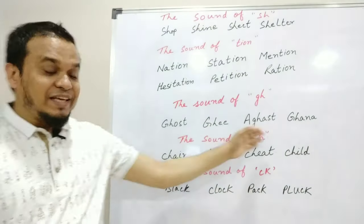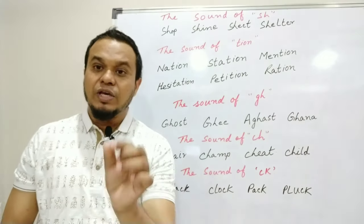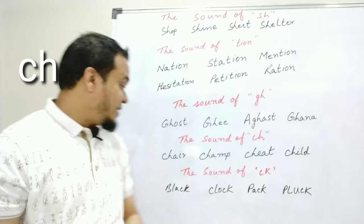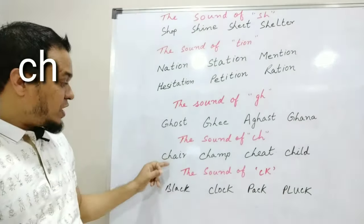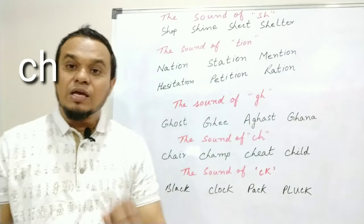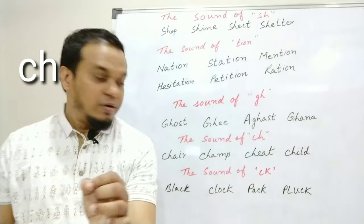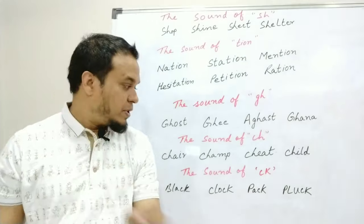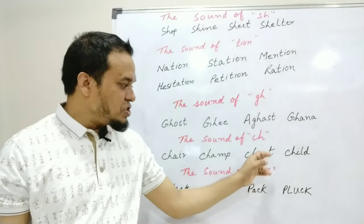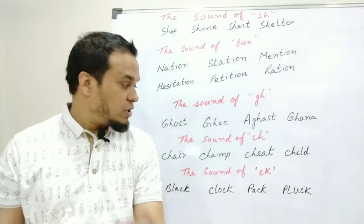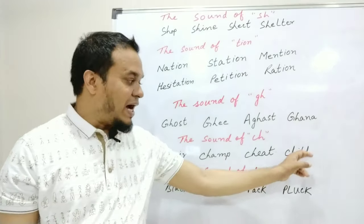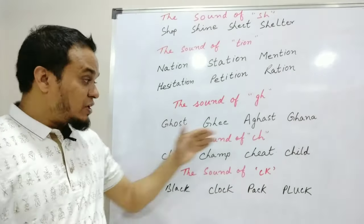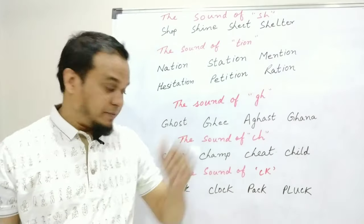Next one is CH. The sound of CH is like in CHOP. For example: CHOP, CHAMP, CHEAT, CHILD. So you have seen that the sound of CH is 'ch'.